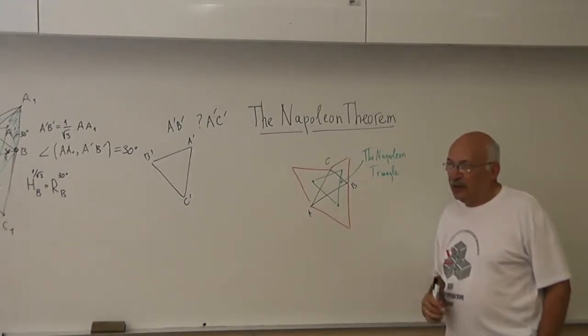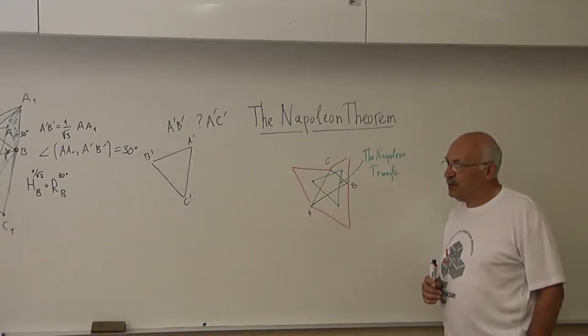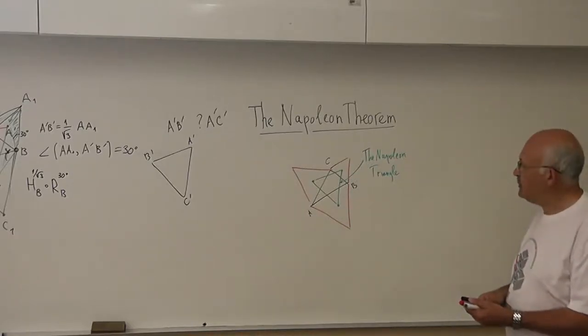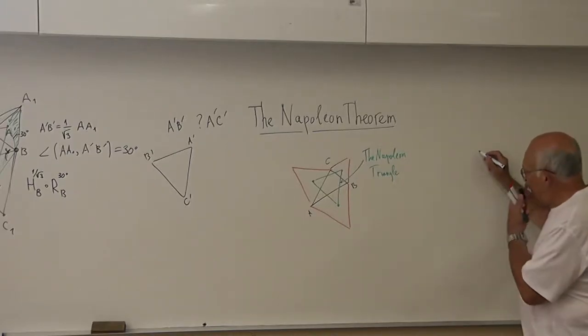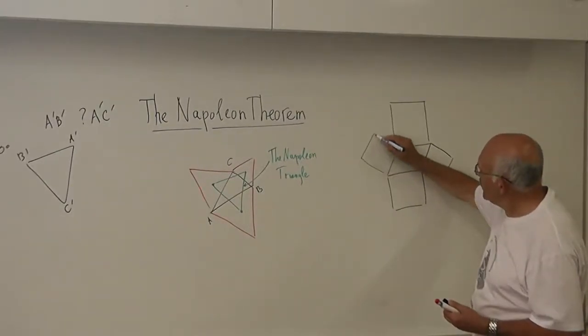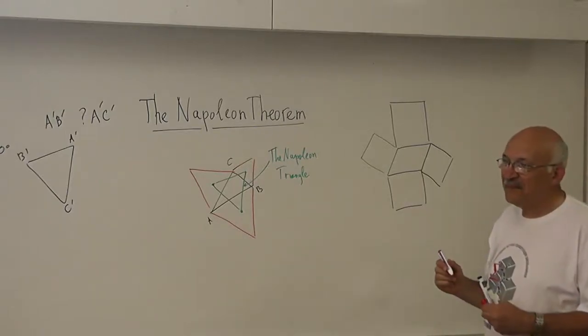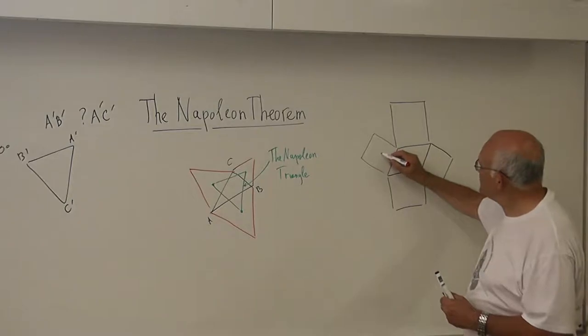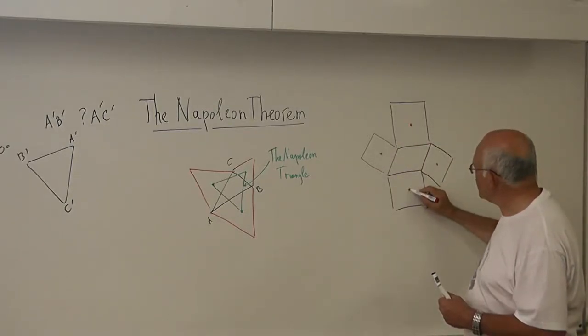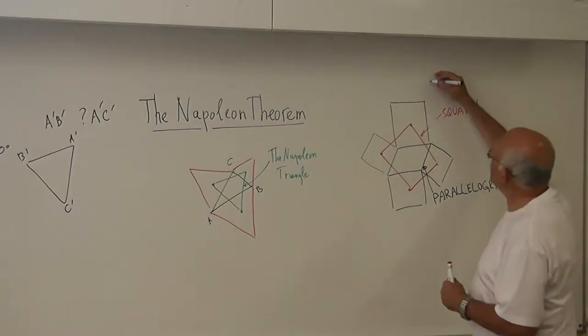So there are quite a number of theorems of this sort. For example, one single theorem is if you take a triangle and draw squares on its sides, then what would you do then? The centers of the squares, or the squares. I think this theorem, or maybe its generalization, is called the Van Aubel theorem.